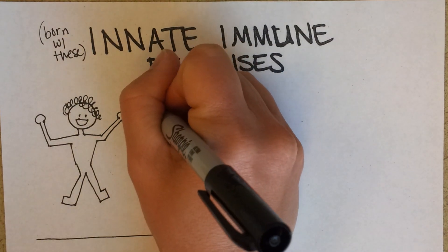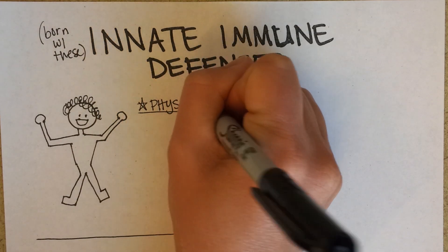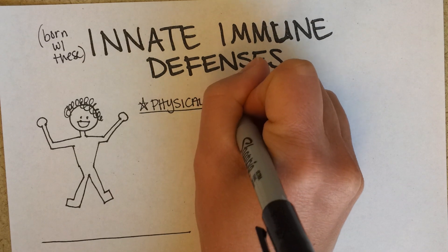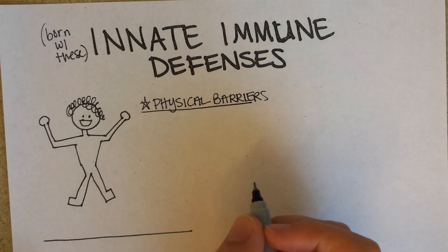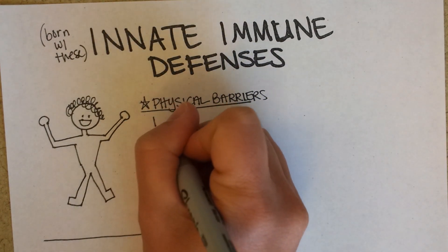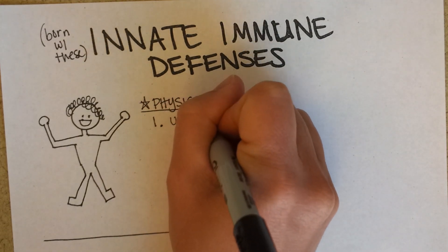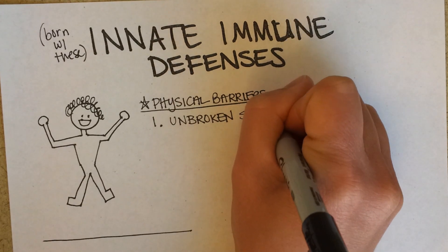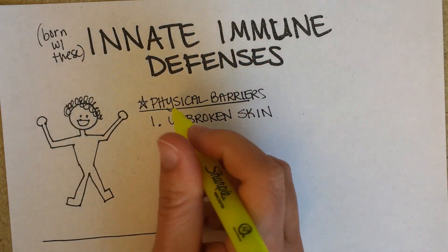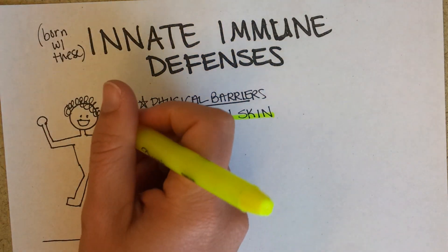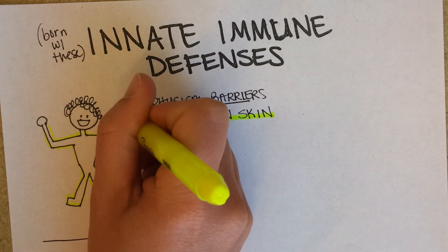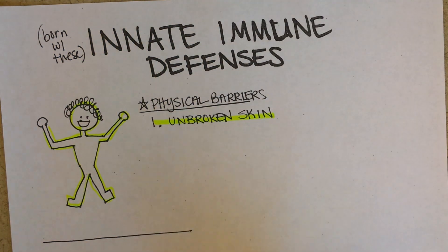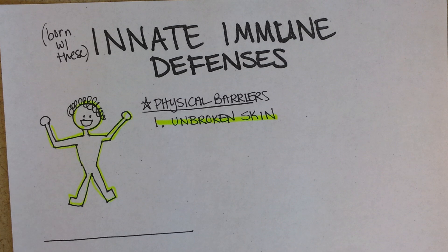The first are physical barriers. The most key of these is unbroken skin. As everyone knows, if you get a cut, that is a possible place where an infection can start.